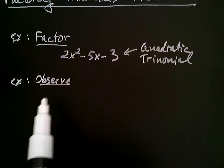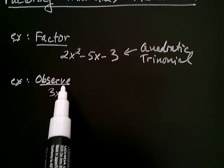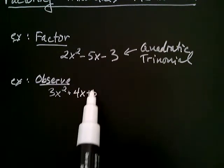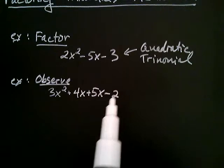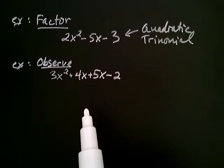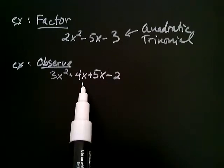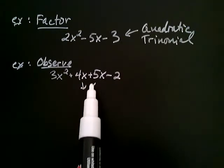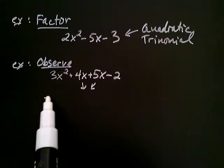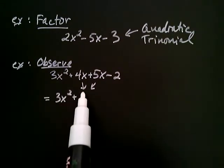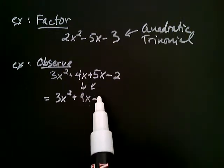If you had 3x² + 4x + 5x - 2, most of the time so far in algebra, we're used to combining like terms. Most of the time, we're used to taking the 4x and the 5x and adding those together and getting 3x² + 9x - 2.